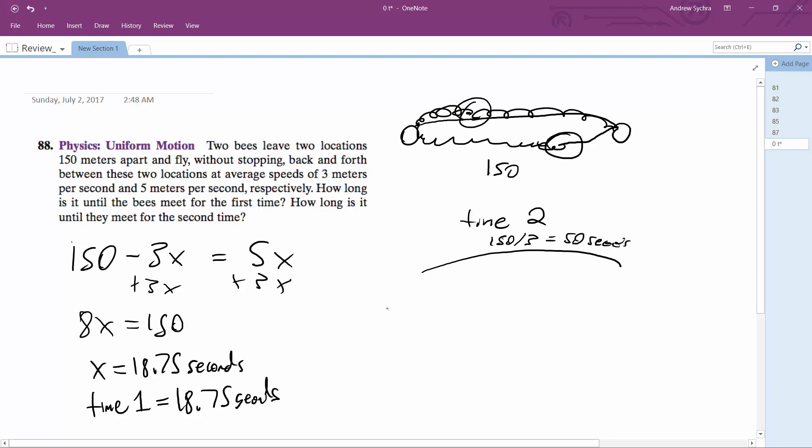So in 50 seconds, 50 times 5 is equal to 250. So the faster bee, the 5, is already gone most of the way. So back and forth is 300 meters.